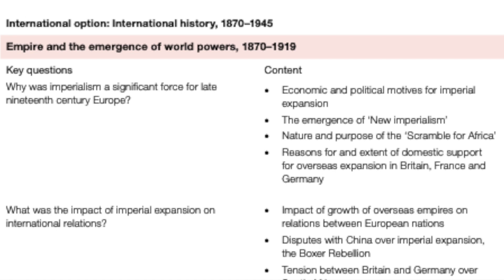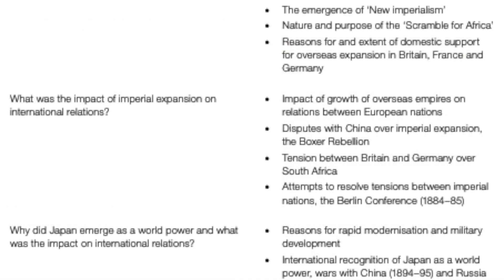For the impact of imperial expansion on international relations, you need to assess whether it affected relations between countries in a negative, neutral, or positive way. There are examples of European powers cooperating — such as the Boxer Rebellion, when European powers worked together to put the rebellion down — but also tensions, such as between Germany and Britain over the Boer War and actions in South Africa. Finally, we see European countries coming together at the Berlin Conference to sketch out ground rules for colonial possessions in Africa.